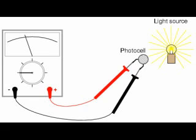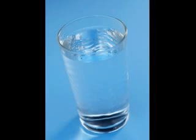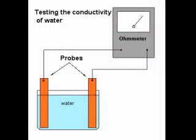What happens when the light hitting the photoresistor gets brighter? What about darker? Measure the resistance of a glass of water, keeping the probes spaced the same and at the same depth when you compare measurements. What happens to the resistance when you add salt to the water?